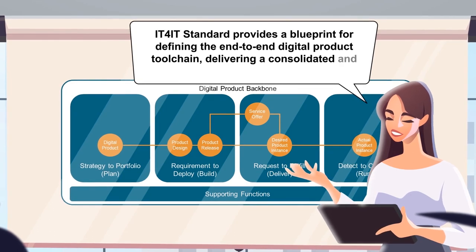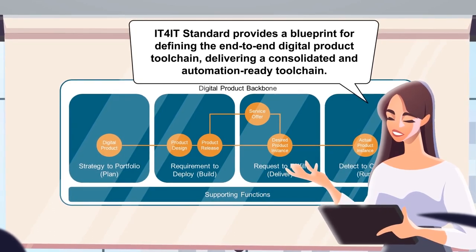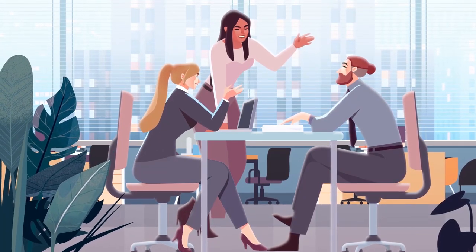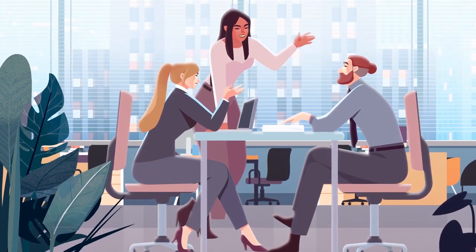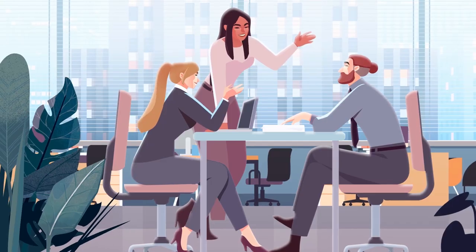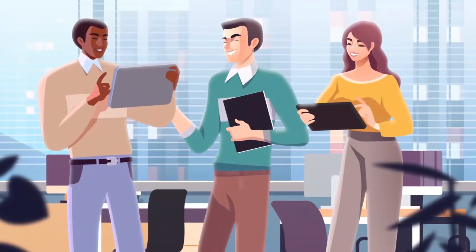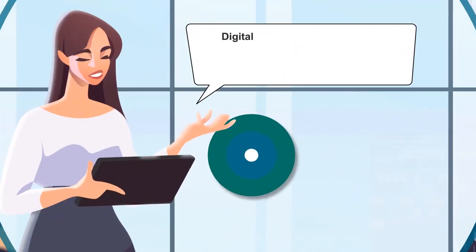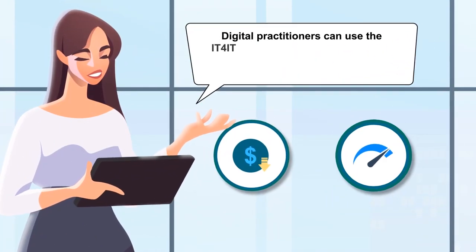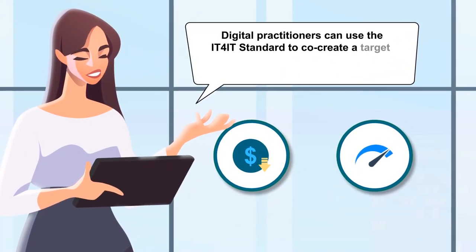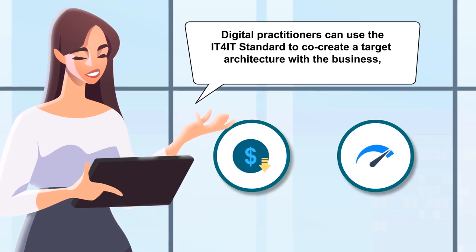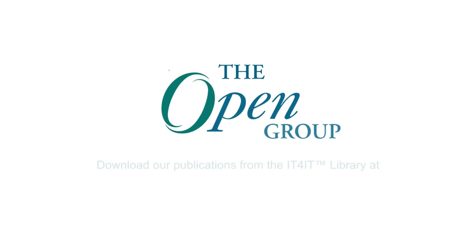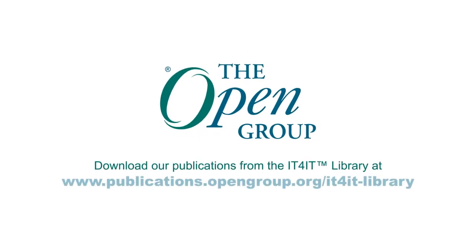IT4IT standard provides a blueprint for defining the end-to-end digital product toolchain, delivering a consolidated and automation-ready toolchain. It helps enterprise architects and sponsors demonstrate the benefits of digital transformation to the business, while release train engineers can use it to build an integrated set of tools. Digital practitioners can use the IT4IT standard to co-create a target architecture with the business, reducing costs and accelerating flow.